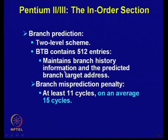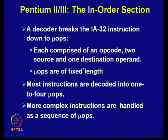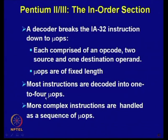Whenever prediction is not correct, the penalty is quite heavy — at least 11 cycles of misprediction penalty, and on average 15 cycles of misprediction penalty. The decoder breaks IA-32 instructions down to micro-operations — each comprised of an opcode, two source and one destination operand — and micro-operations are of fixed length. Most instructions are decoded into 1 to 4 micro-operations.